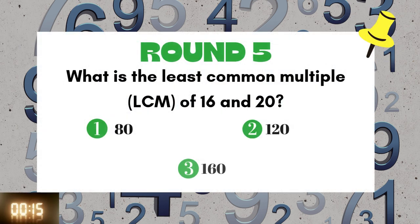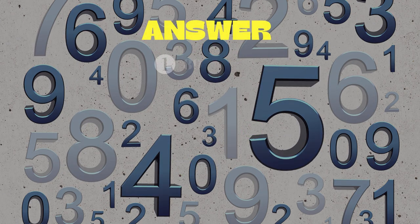Round 5: What is the least common multiple of 16 and 20? The answer is 80.